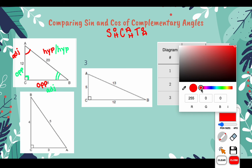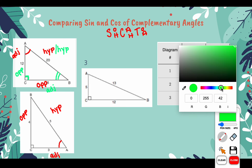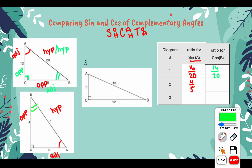Now let's do this for example 2 as well. We are first looking for sine of A, so we label our reference angle. We have opposite, hypotenuse, and adjacent. Sine would be opposite over hypotenuse, so sine of angle A for diagram number 2 is 4 over 5. Now we want cosine of angle B. Here's our reference angle — let's relabel. This side would be opposite, this side would stay as the hypotenuse, and this side would be adjacent. Cosine is adjacent over hypotenuse, so the ratio of cosine of B is again 4 over 5.